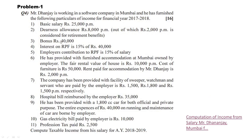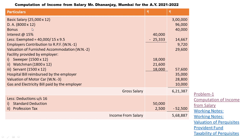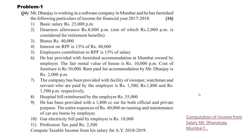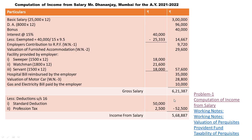Next is bonus of Rs. 40,000. Bonus is also fully taxable, so Rs. 40,000 is taken in full. Now, interest on RPF at the rate of 15% amounts to Rs. 40,000. Interest credited to the Recognized Provident Fund is exempted up to 9.5%. The rest is taxable.